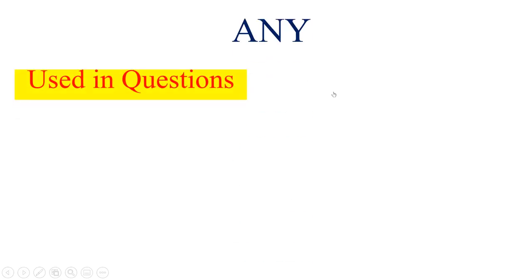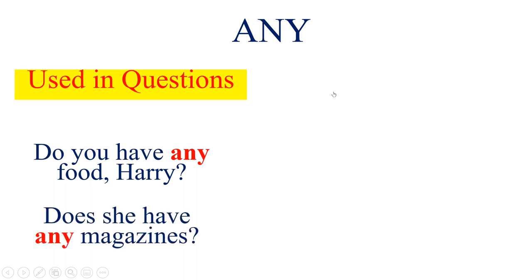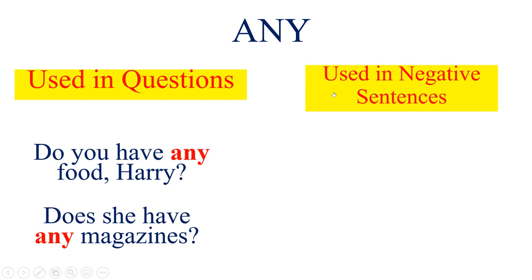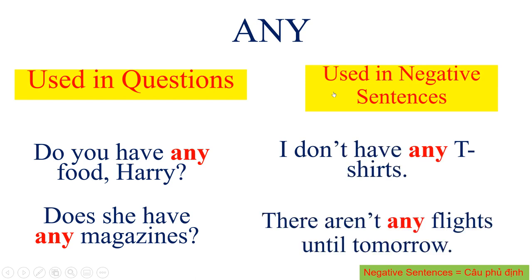Now 'any.' In the first situation, 'any' is used in questions. For example: Do you have any food, Harry? Or: Does he have any magazines? In the second situation, 'any' is used in negative sentences. For example: I don't have any T-shirts. Or: There aren't any flyers until tomorrow. Remember: 'any' is used only in questions and in negative sentences.